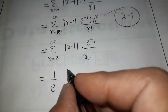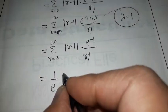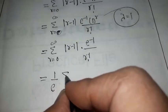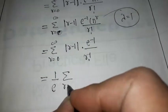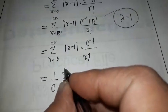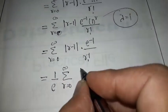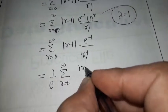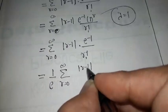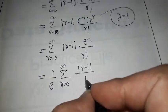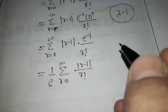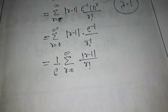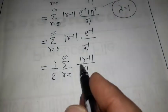Since e to the power minus 1 equals 1 upon e, this can be written as 1 upon e into summation r from 0 to infinity of |r minus 1| upon factorial r. Now let's expand this for different values of r.